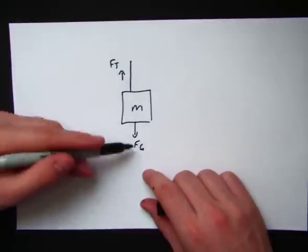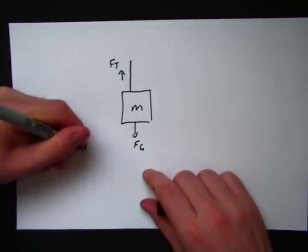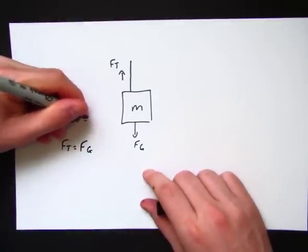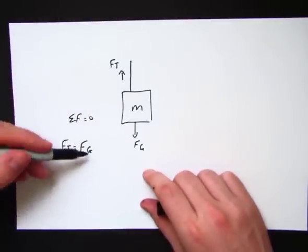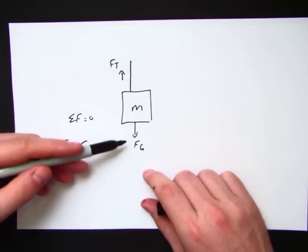Now, if this was just hanging in midair, this force of tension would have to be equal in magnitude to the force of gravity, because the net force is equal to zero, and these two are going to cancel each other. That's one way of looking at it.